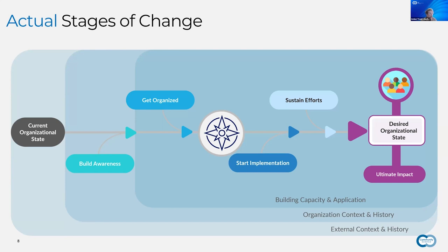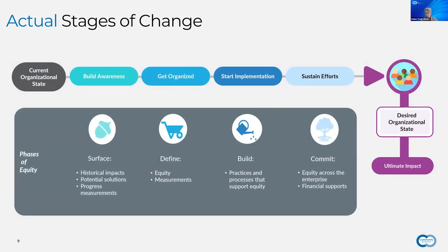Lastly, when you're trying to change your organization's state to advance equity — to embed equity throughout your policies, practices, and worldview — it's about building that capacity. You're building awareness, getting organized, you have a compass telling you where you want to go, and you start implementation. We haven't even mentioned when you start seeing the changes you hope to see. That's a lot of effort before you get to ultimate impact. So what you can achieve in terms of equity really depends on where you are along the stages of change.